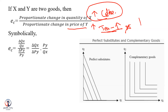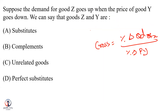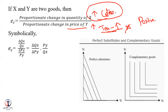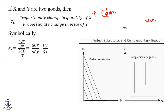We can use the same formula to identify a positive relationship. For substitute goods, there is a positive relationship — whenever there is a change in the price of Y, the quantity of X changes in the same direction. Y and X are substitutes.